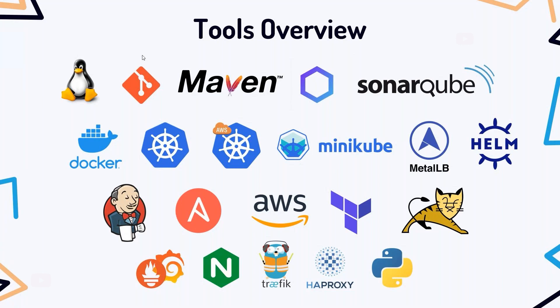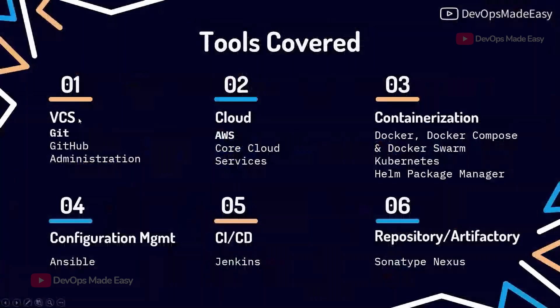We also cover some code based on Python — not end-to-end Python, just some examples. For version control, we cover Git, GitHub, and complete GitHub administration including users, repositories, and administration. For cloud, we cover the core AWS services needed for DevOps and containerization.